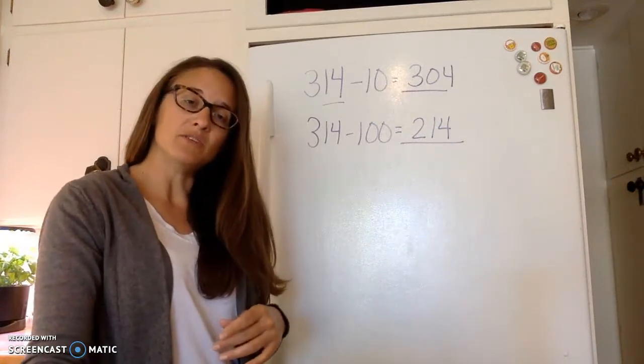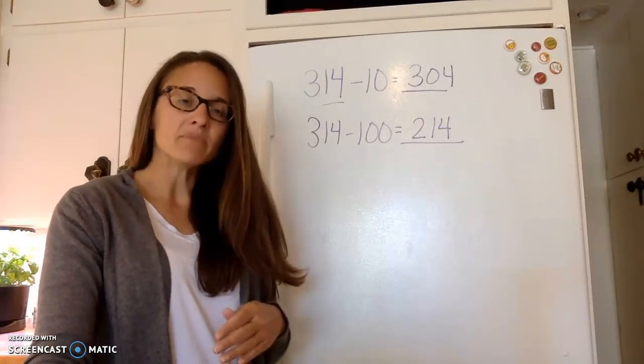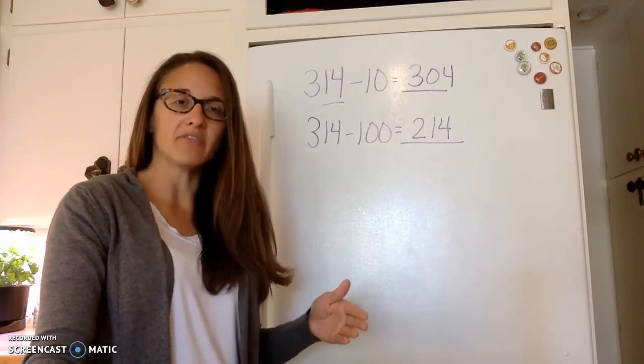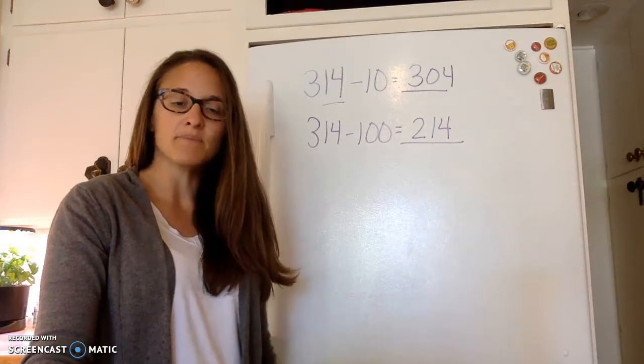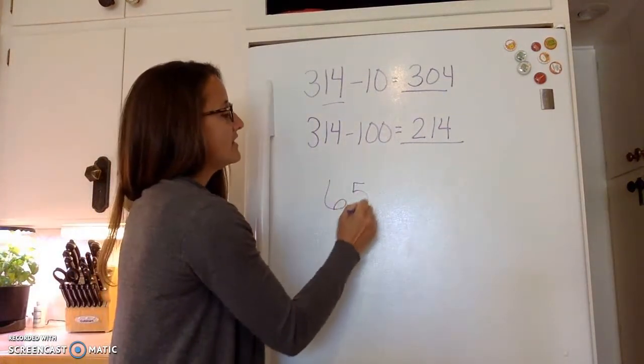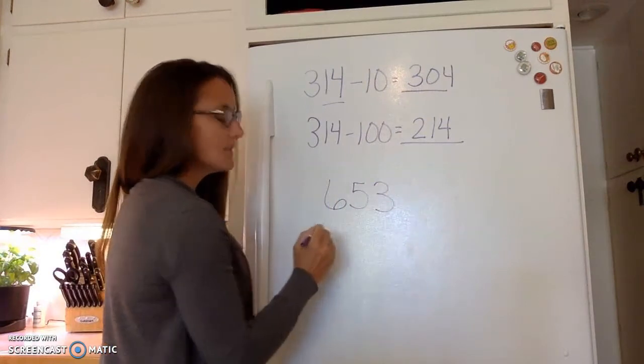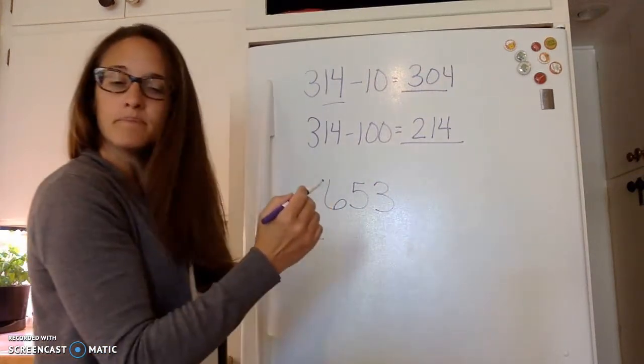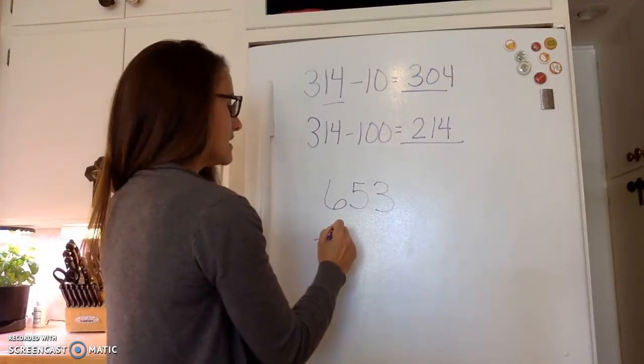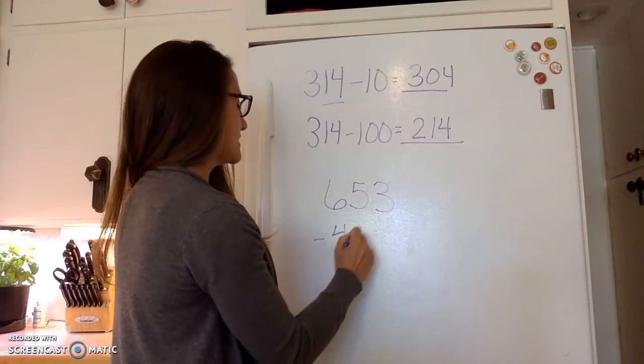The next step that we're going to be doing is lining our numbers up so we can show that we're going over and borrowing or taking away from the other numbers. So let's try one of those. Let's do 653 minus, let's do this one, let's do 419.